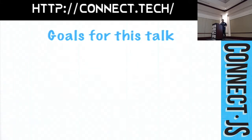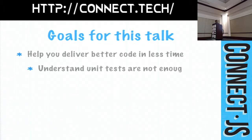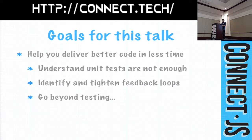The goals for this talk are really simple. I want to help you deliver better code in less time, and I've got three ways of doing it. First is understanding that unit tests are necessary but not sufficient — automated unit tests are a really good thing, but it's not really enough. You also need to look at your feedback loops. And the last thing is you want to go beyond just testing. That's why the title is 'On Beyond Testing.'